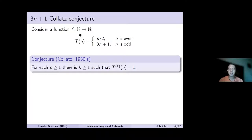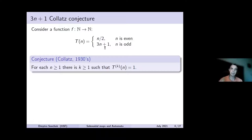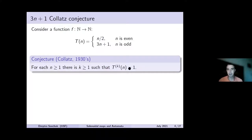If you take a function f from natural numbers to natural numbers defined as follows: if n is even, you divide it by 2; if n is odd, you multiply by 3 and add 1. Then starting from some specific value of n, you apply iterates of this map T. The conjecture states that for each n, no matter what number you start with, there will be some iterate of T such that you reach 1. After reaching 1 — which is odd — you get to 4, then 2, then 1, cycling with this invariant cycle of length 3.